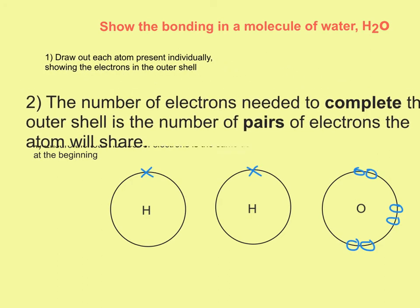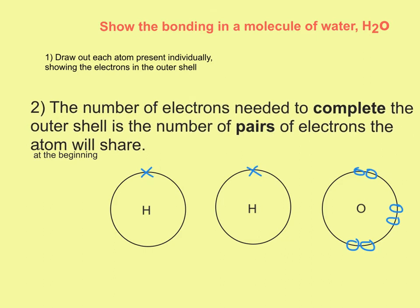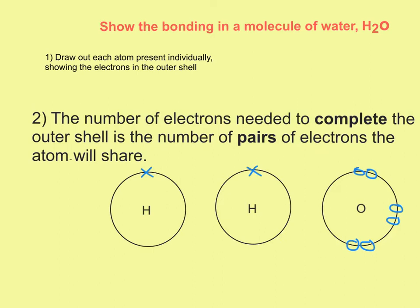The next thing is working out the number of electrons needed to complete the outer shell, which is the number of pairs of electrons the atom will share. Hydrogen is a special case — because it only has one shell, it only needs two electrons to fill that shell. So each hydrogen needs to share one pair. For oxygen, it has six electrons, so it needs two more to complete its outer shell, meaning oxygen is going to share two pairs.